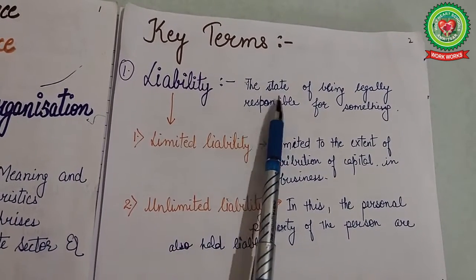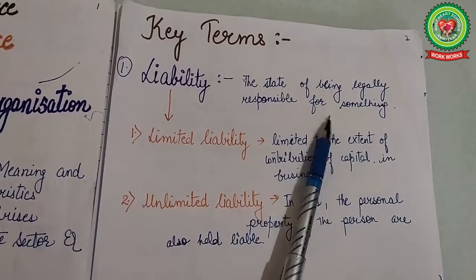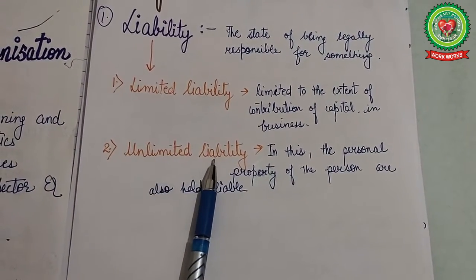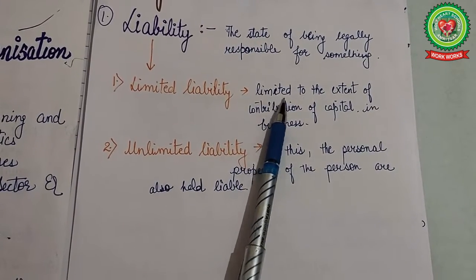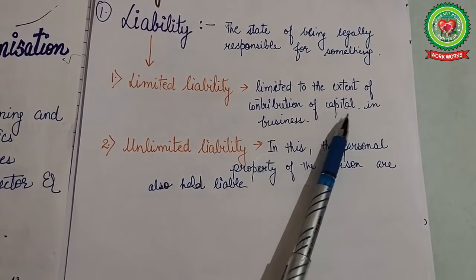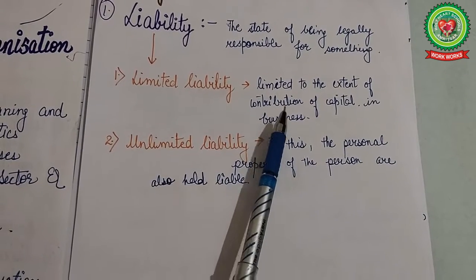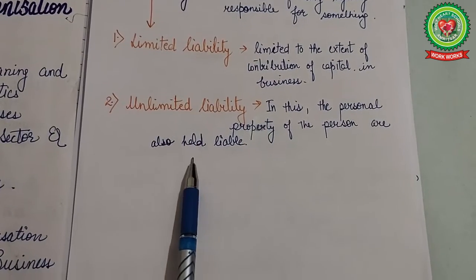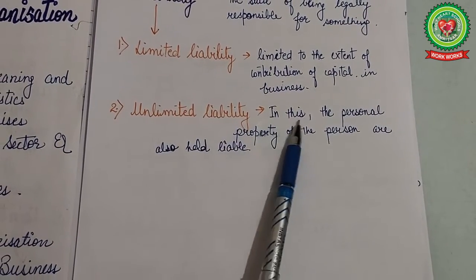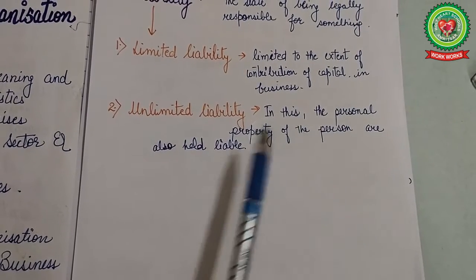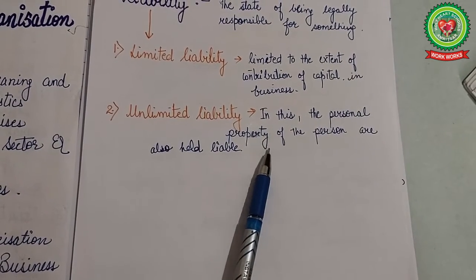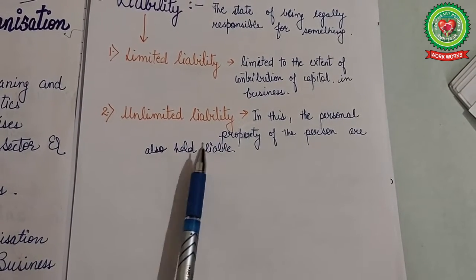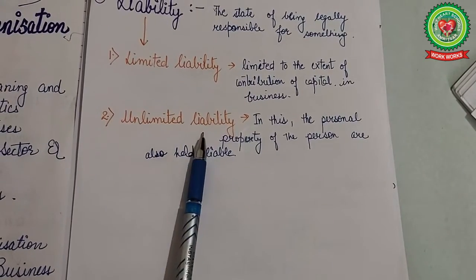First, we will discuss our key terms. The first is liability — the state of being legally responsible for something. It is of two types: limited liability and unlimited liability. Limited liability is limited to the extent of contribution of capital in business. Unlimited liability means the personal property of the person is also held liable — personal property like one's own house — to pay the creditors.